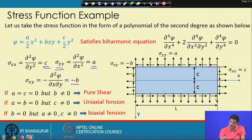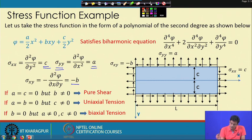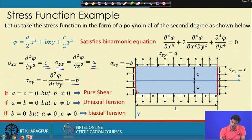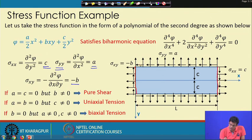For instance, in a rectangular two-dimensional body with x and y axes, σxx = c means there is a constant stress — essentially tension or compression depending on the sign of the constant. Similarly σxy represents shear stress along the body.